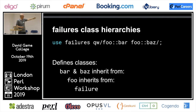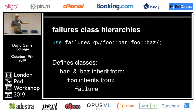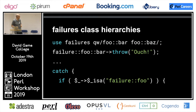Here for example we create two classes FooBar and FooBas which inherit from Foo, and they all inherit from Failure. So you can always check for the Failure class as a fallback. You throw the object and you can catch a subclass, checking with an isa.